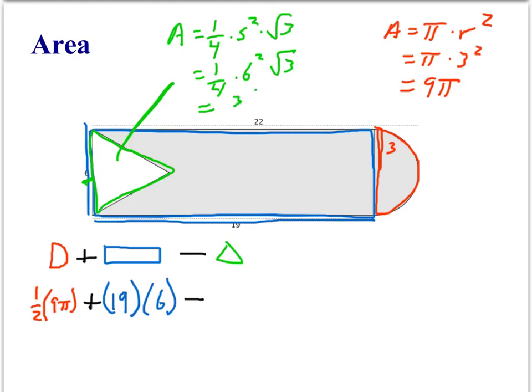And 6 squared is 36. So we have 36 fourths root 3. And 36 fourths can simplify one step further to 9. So we have 9 square root 3. So that's the area of our rectangle. So we have minus 9 square root 3.